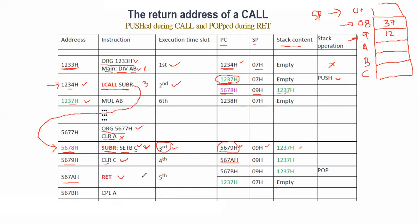Then at 0x5678 the return instruction is executed (fifth/sixth instruction). When RET executes at address 0x5678, the PC value will be 0x5679 (since RET is a one-byte instruction). The pop operation happens: SP decrements from 0x09 and upper byte 0x12 is retrieved; SP decrements again to 0x07, lower byte 0x37 is retrieved. The new value of SP becomes 0x07 and the stack is empty. The value 0x1237 is loaded into PC.